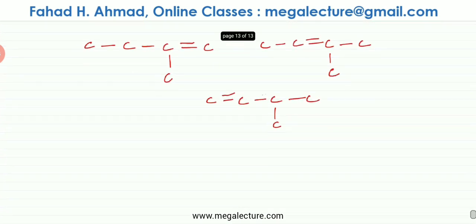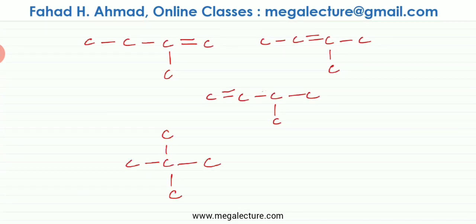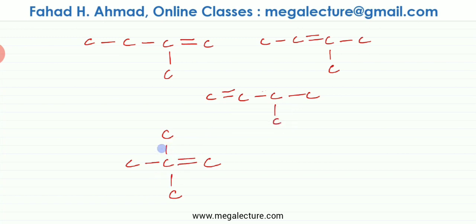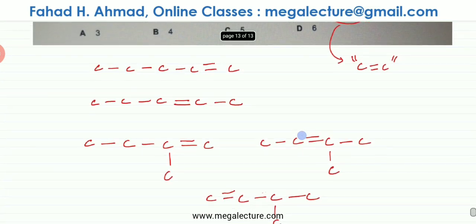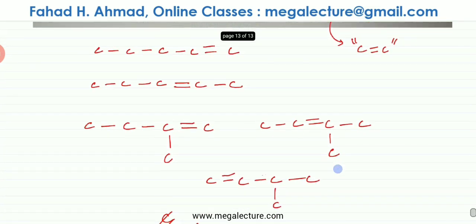Another version could have three carbon atoms in a row with two branches, but that version is not possible because adding a double bond to the middle carbon atom would cause it to exceed four bonds. So that molecule is not possible, leaving us with five structural isomers in total.